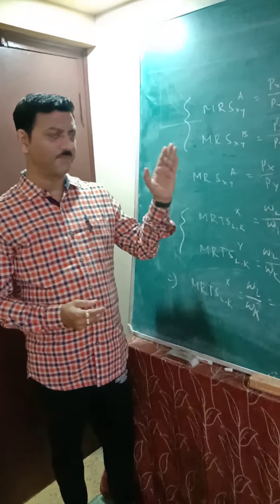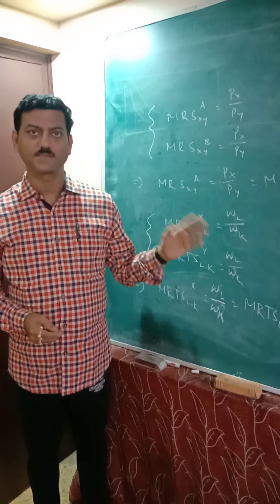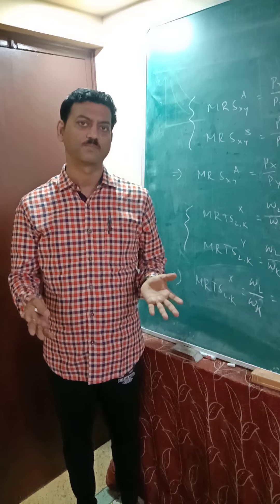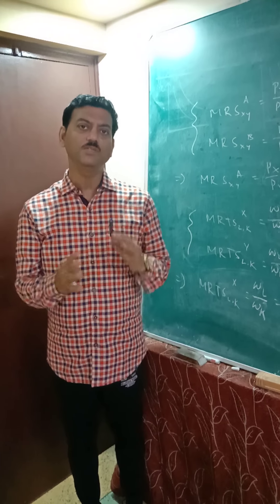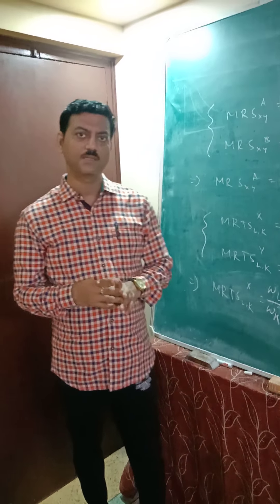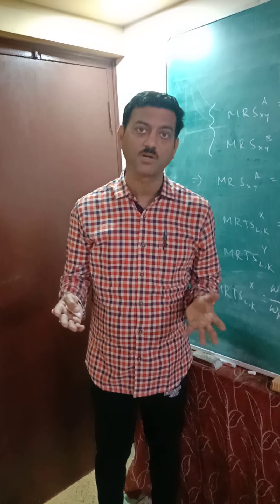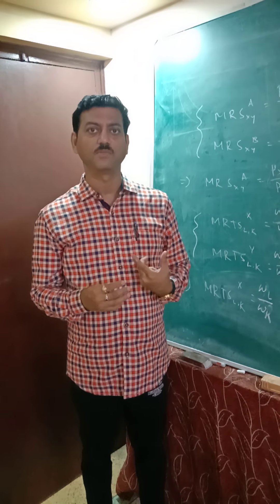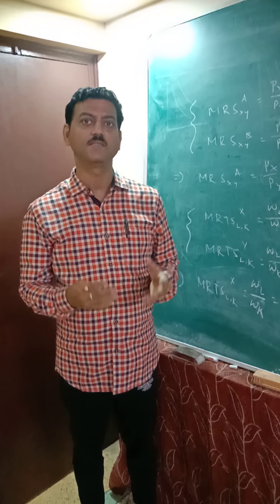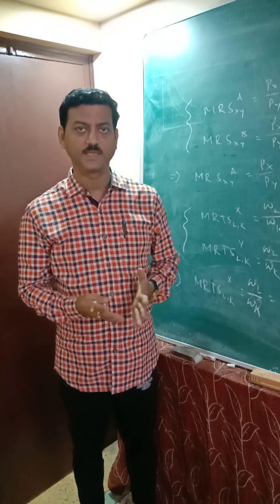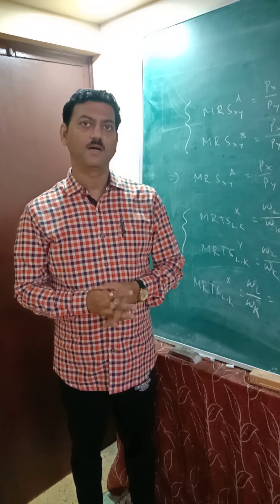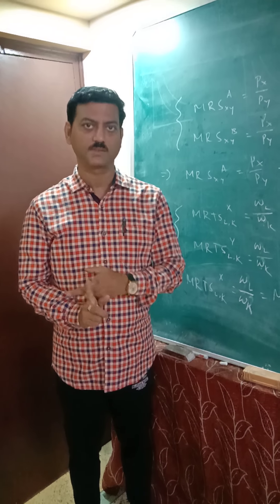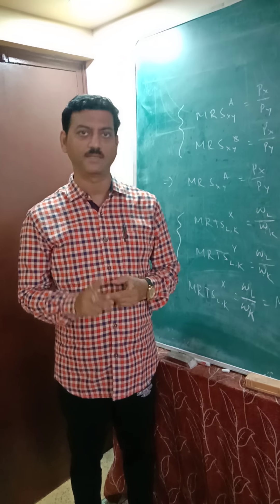We consider the role of perfectly competitive market structure for optimum allocation of resources. In a perfectly competitive market, there are a large number of buyers and sellers producing and selling homogenous or identical products. The most important point regarding this market structure is that product prices are fixed.